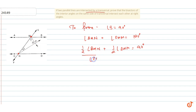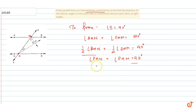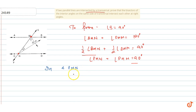Half of angle BMN is angle PMN, and half of angle DNM is angle PNM. So angle PMN plus angle PNM equals 90 degrees. Now we form triangle PMN, and we know that all angles in a triangle sum to 180 degrees by the angle sum property.